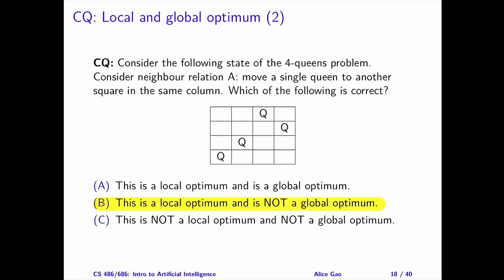Since the neighbor relation requires us to move one queen, each empty square corresponds to one neighbor of the current state. For example, the top left square represents the neighbor state where the leftmost queen is moved to the top left square. Therefore, for each empty square, I will construct the neighbor in my mind, calculate its cost, and write down the cost of the neighbor in that square.